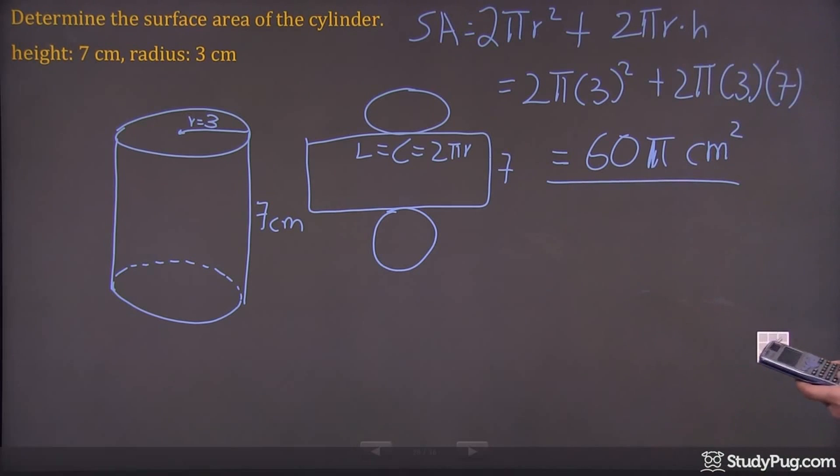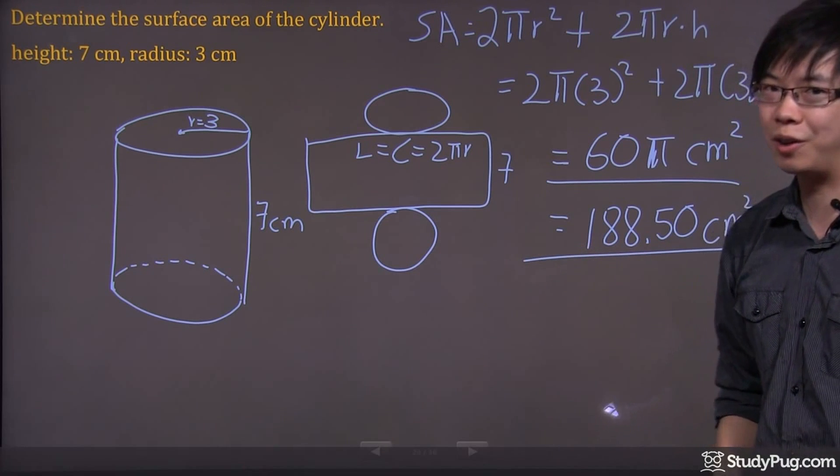But if you want decimals, then it's going to get you 188, I'll give you two decimal places, .50 centimeters squared. And this is your final answer for this question.